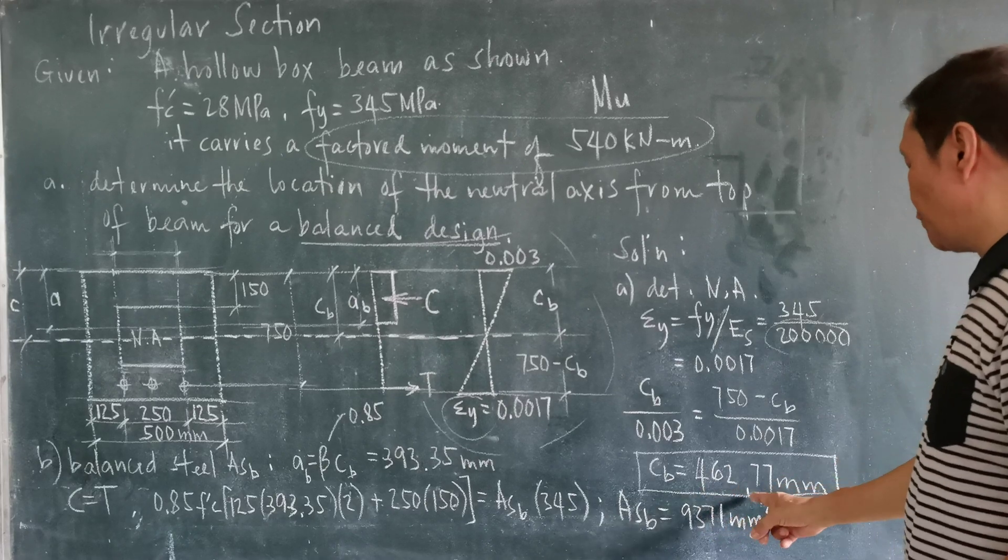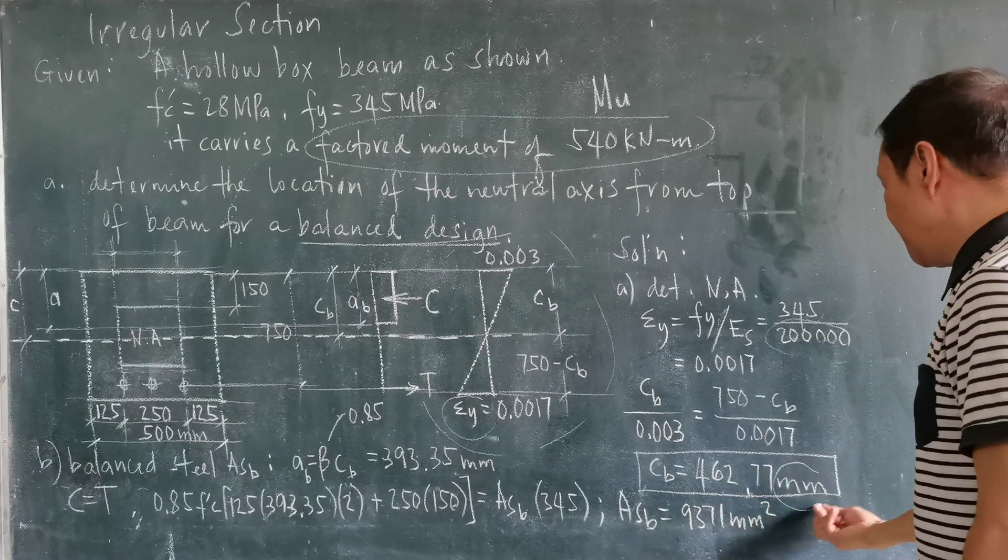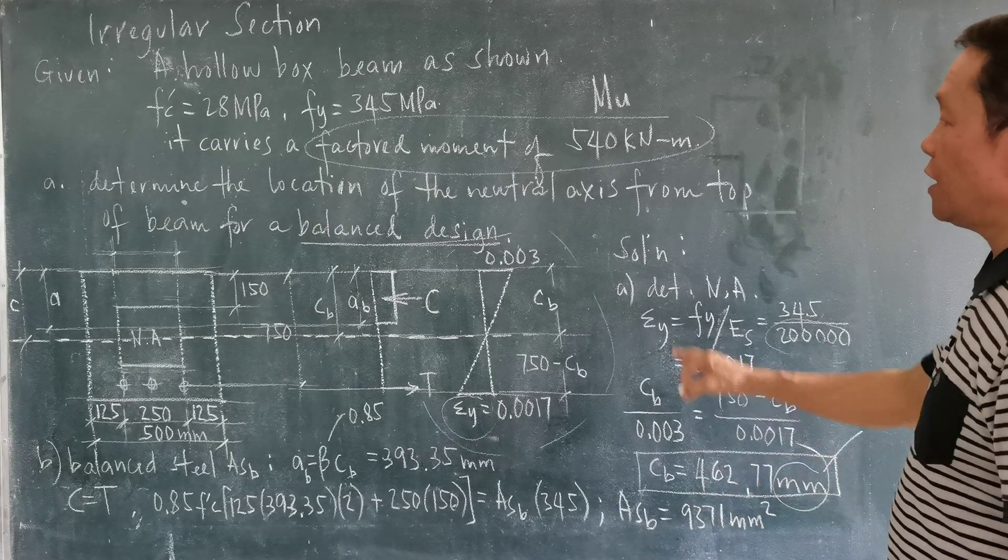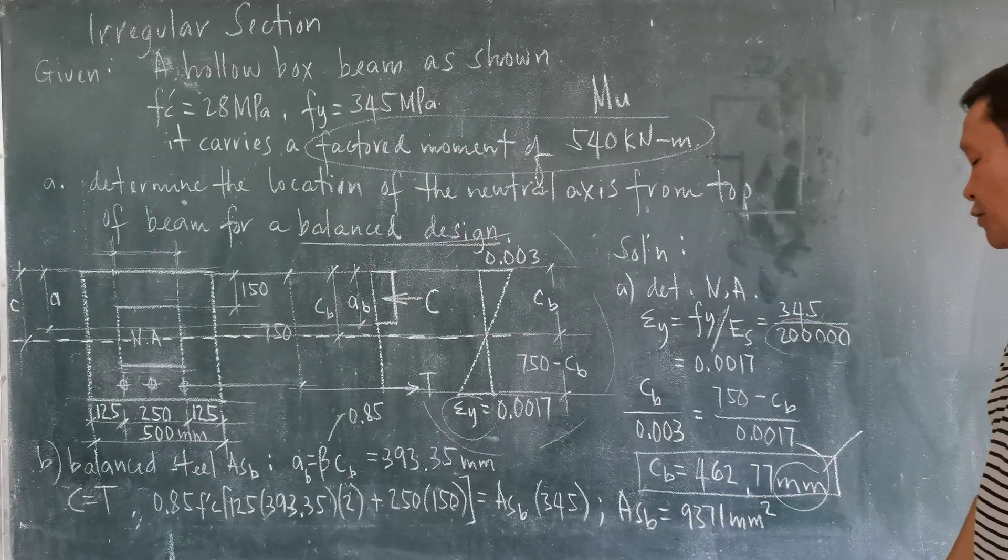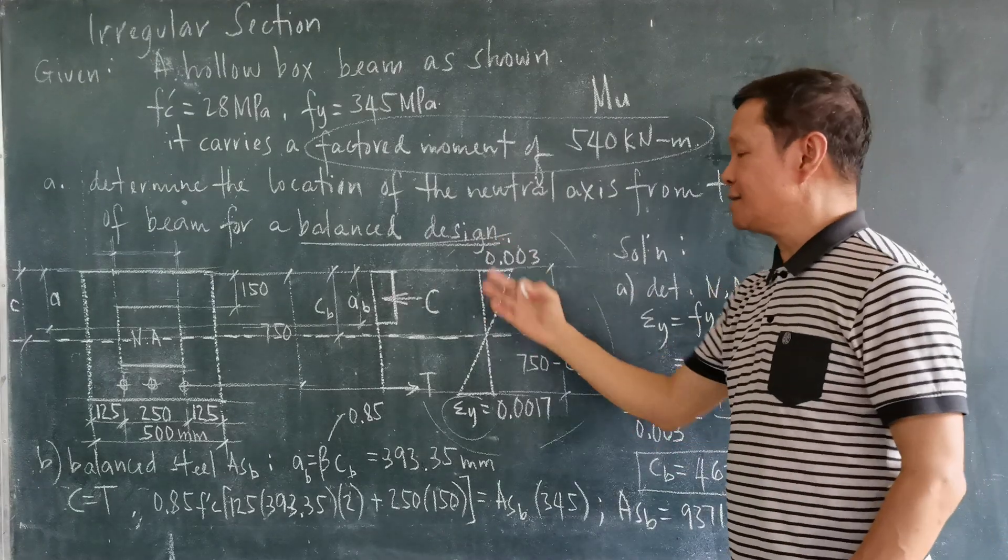So solving C sub B, you will get 462.77 millimeters. So this is now the location of the neutral axis from the top fiber of the beam under compression for a balanced design.